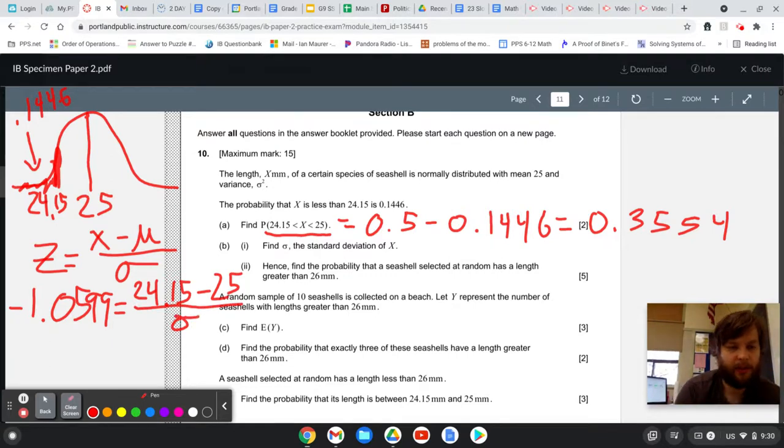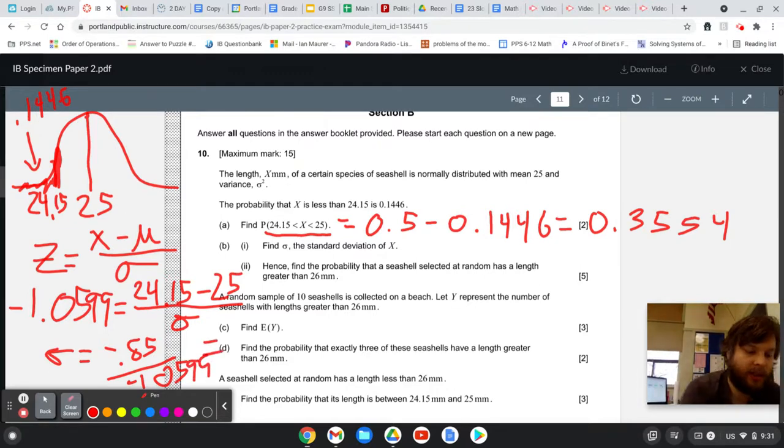If you rearrange this equation, multiply by sigma, divide by that value right there, you'll have negative 0.85 divided by negative 1.0599. So let's calculate that, negative 0.85 divided by the number I just got is 0.802.